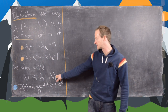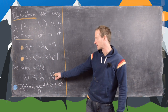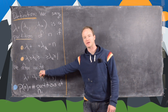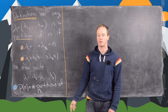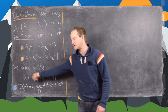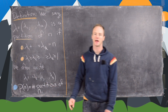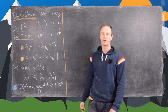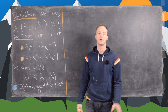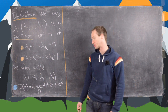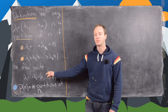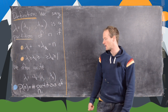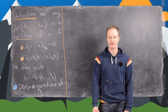We often write, instead of the tuple lambda 1 to lambda k, just the addition problem unsimplified — we'll see that in the examples. Another thing we want is something called the partition function. p of n is defined to be the number of partitions of n.